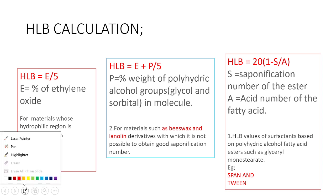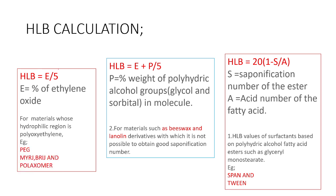The first formula is HLB = E divided by 5, where E indicates the percentage weight of ethylene oxide. This formula is used for surfactants which contain a polyoxyethylene group as the hydrophilic region.